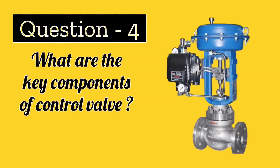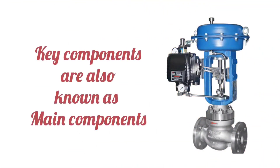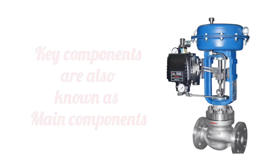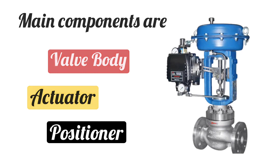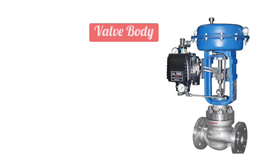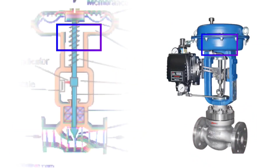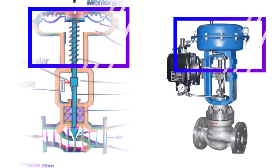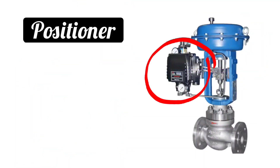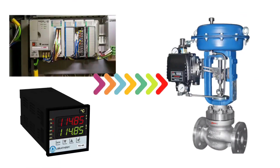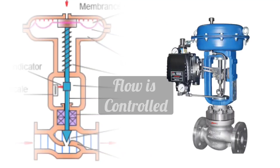What are the main components of a control valve and how do they work? The main components of a control valve are the valve body, actuator, and positioner. The valve body is the main part which controls the flow of fluid. The actuator is the mechanism that makes the valve body move and regulates the flow. The positioner is the device that receives the signal from the control loop and adjusts the position of the actuator, thereby controlling the flow.